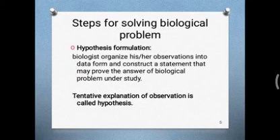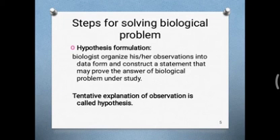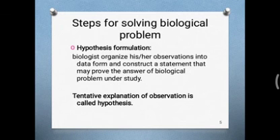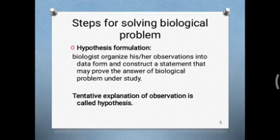Now, class, take out your page 22. In the formulation of hypothesis section on page 22, start underlining from the second line and write the question: 'Write down the formulation of hypothesis.' The definition to write is: tentative explanation of observation is called hypothesis — the tentative explanation of any observation is called hypothesis.